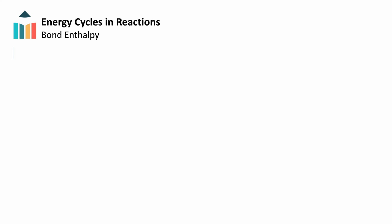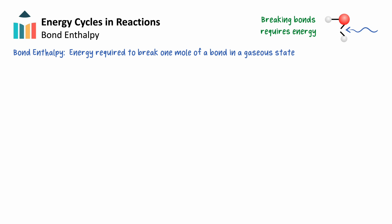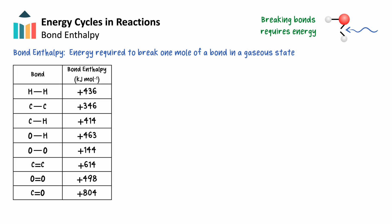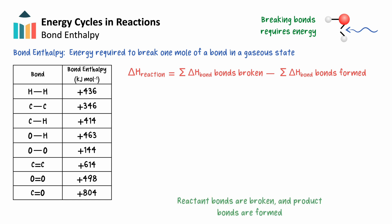Bond enthalpy refers to the energy required to break one mole of a particular bond in a gaseous state. As we saw before, breaking bonds is an endothermic process, as energy is needed to overcome the attractive forces holding atoms together. From standardized bond enthalpy data, we can calculate the overall change in enthalpy of a reaction by taking the sum of the bond enthalpies of the bonds broken minus the sum of the bond enthalpies of the bonds formed. We treat every bond in the reactants as if it were being broken, and every bond in the products as if it were being formed. By subtracting the bonds formed, we flip the sign of their bond enthalpy values, as the energy lost when a bond is broken is equal to the energy gained when the same bond is formed.